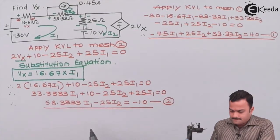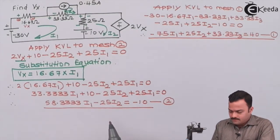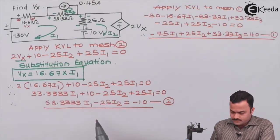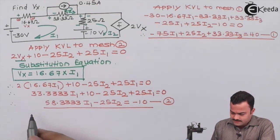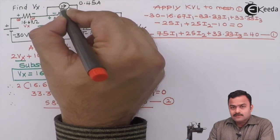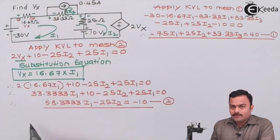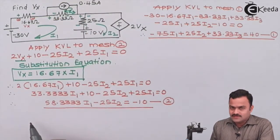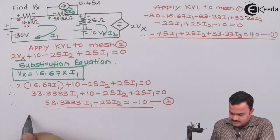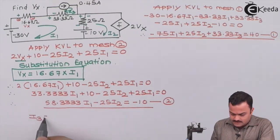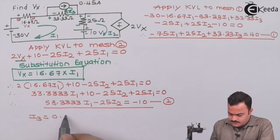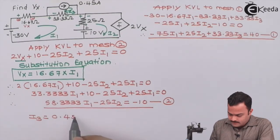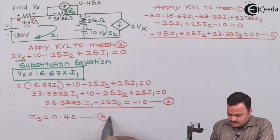So we got an equation in terms of mesh currents i1 and i2. And finally in the third mesh, no need to apply KVL because current source is a part of mesh. I can directly say i3 as 0.45, that will become our equation number 3.